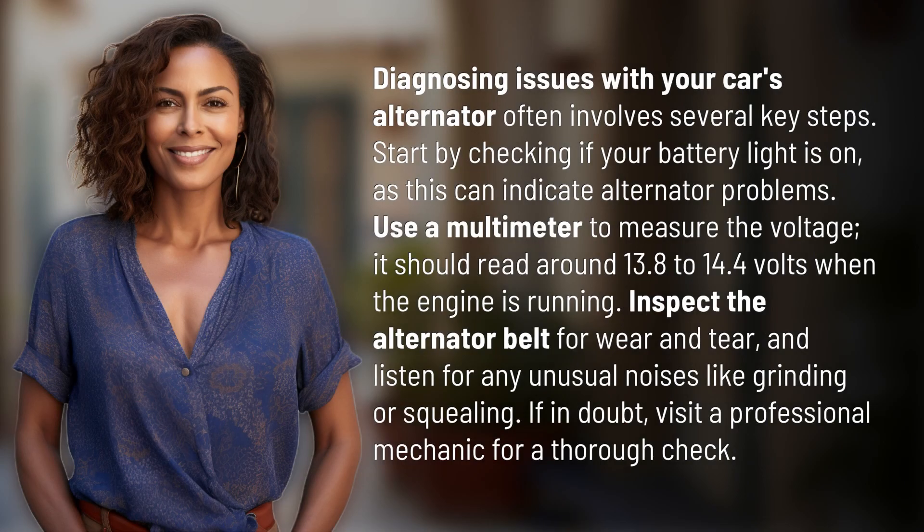Diagnosing issues with your car's alternator often involves several key steps. Start by checking if your battery light is on, as this can indicate alternator problems. Use a multimeter to measure the voltage — it should read around 13.8 to 14.4 volts when the engine is running.